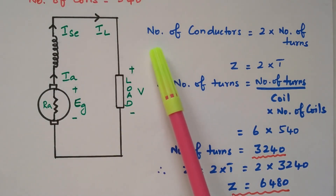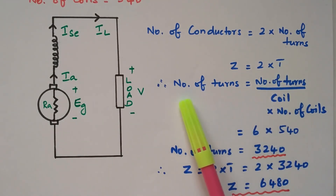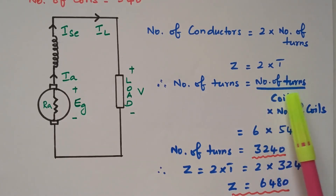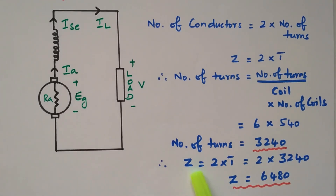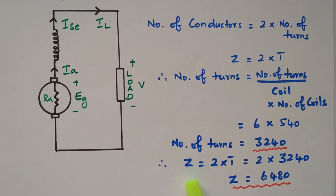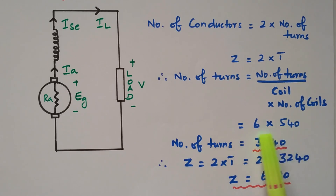Number of conductors Z = 2 × number of turns = 2T. Number of turns = turns per coil × number of coils = 6 × 540 = 3240. Therefore number of conductors Z = 2 × 3240 = 6480. The number of conductors is not directly given, but from the turns per coil and total coils we calculated the number of turns, and from that the number of conductors.